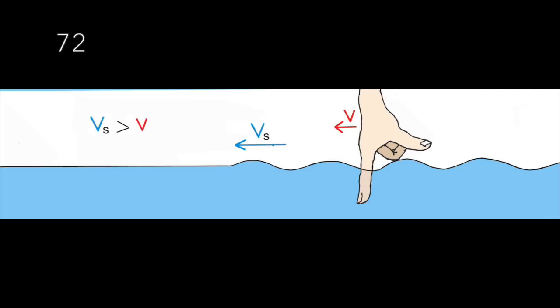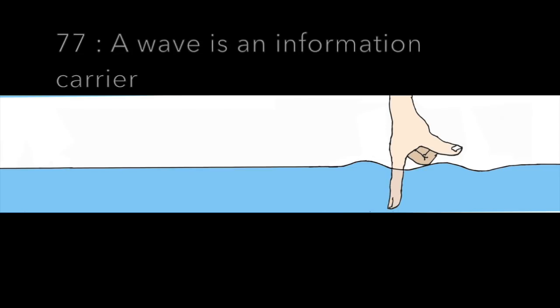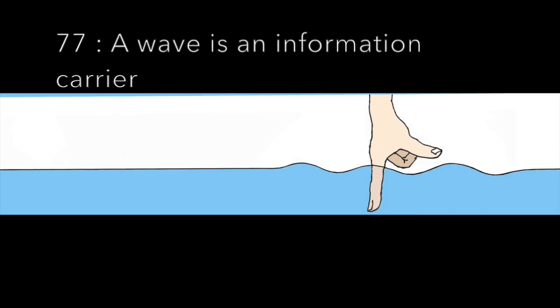Again, notice that the wave runs forward, faster than the finger. It keeps the fluid warned about the presence and movement of the finger. This is a view of the process from above. The moving finger is featured by a red point. Now you understand what is a wave. A wave is an information carrier.